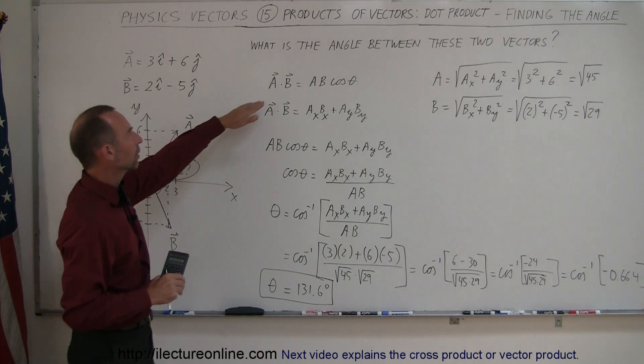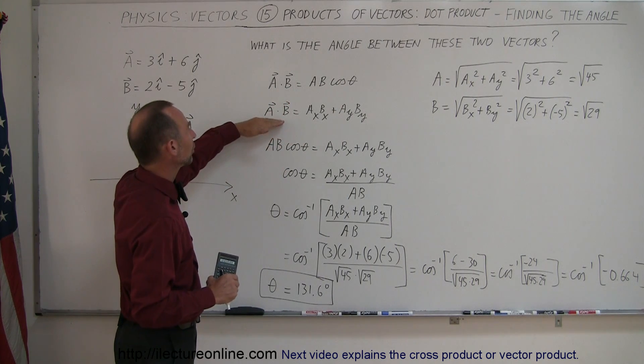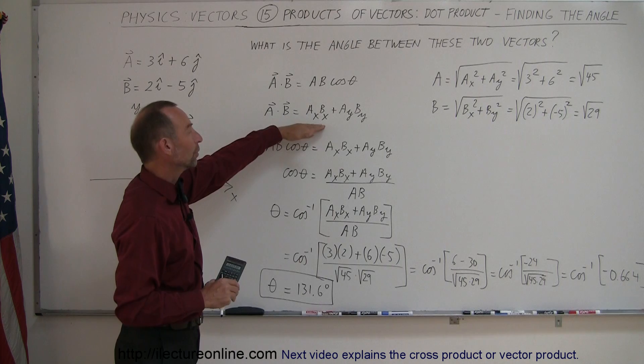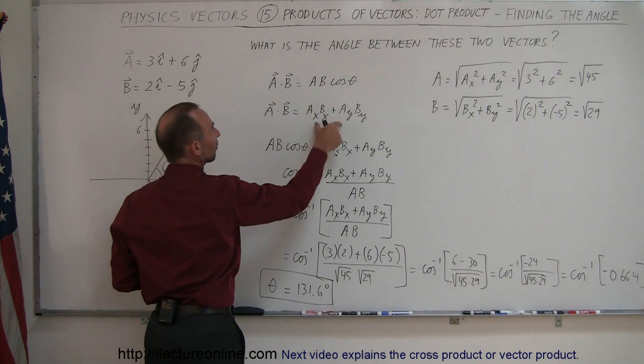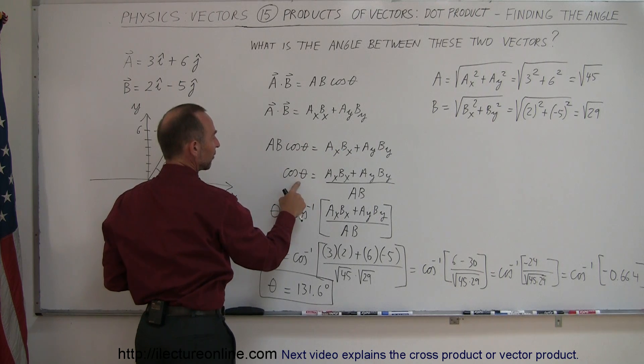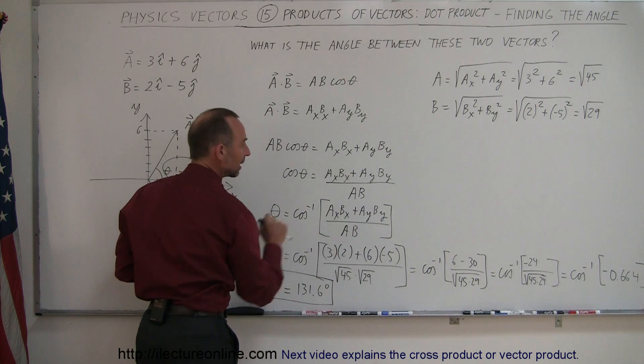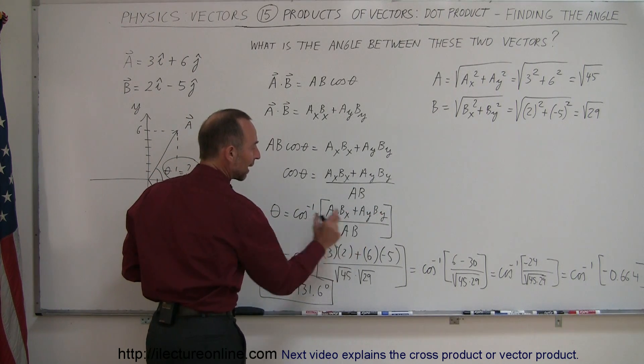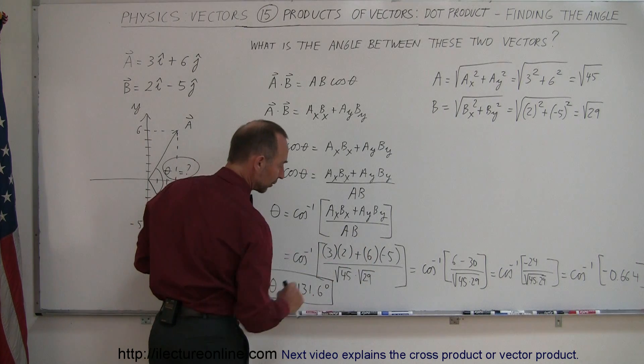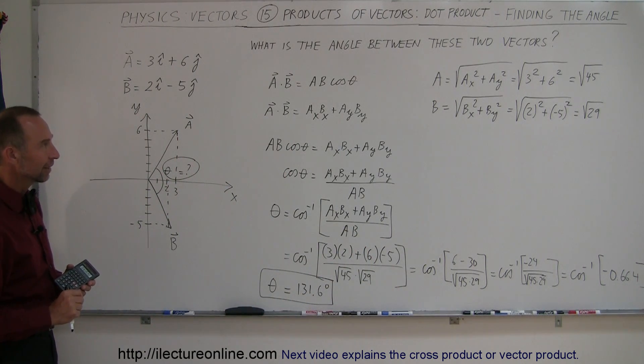we realized that the cross product A dot B is A times B times the cosine of theta. We know that we can also write it as the product of the X and the Y components like that, and sum them together. Which means that this equals this. We can solve that for the cosine of theta. And then we take the arc cosine to solve for theta. Plug in the component magnitudes AX, BX, AY, BY. Plug in the magnitudes of A and B. Multiply it all together. And take the arc cosine, and that's how you find the angle.